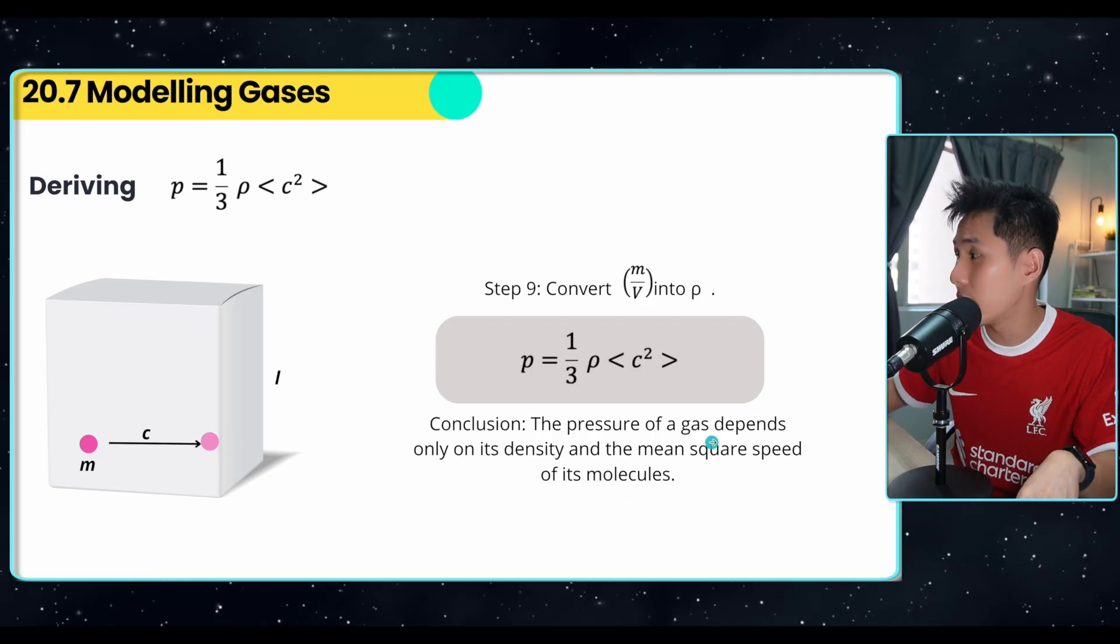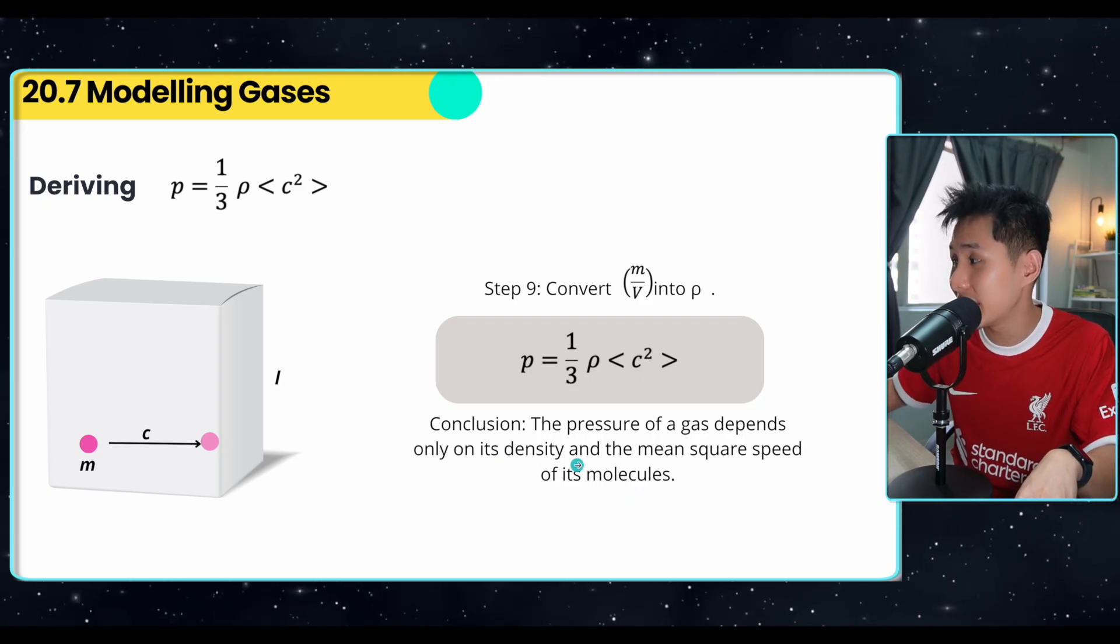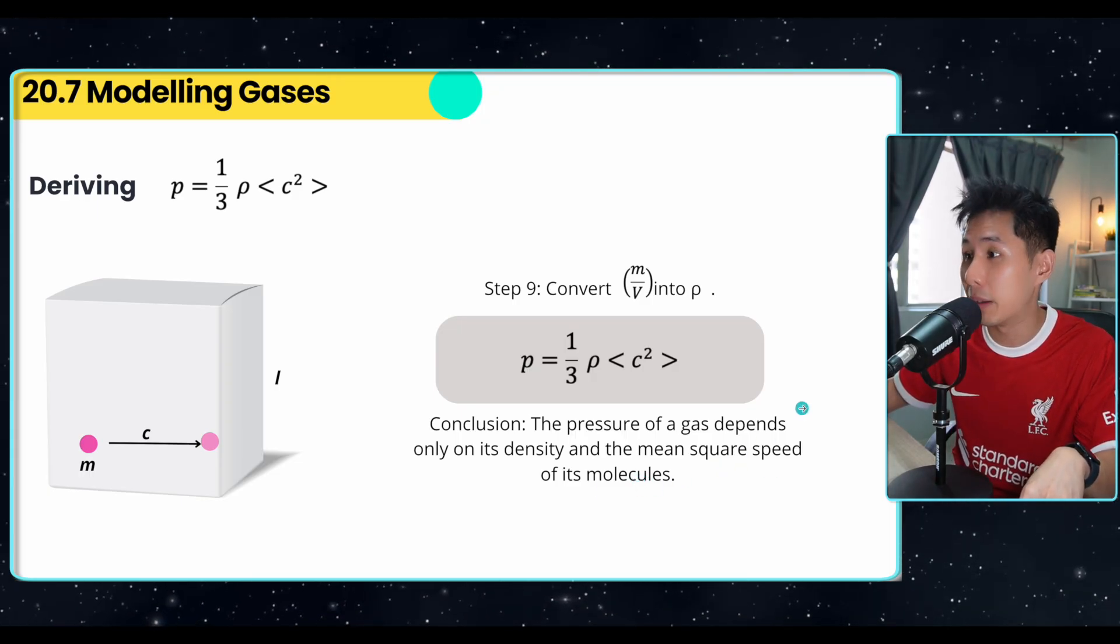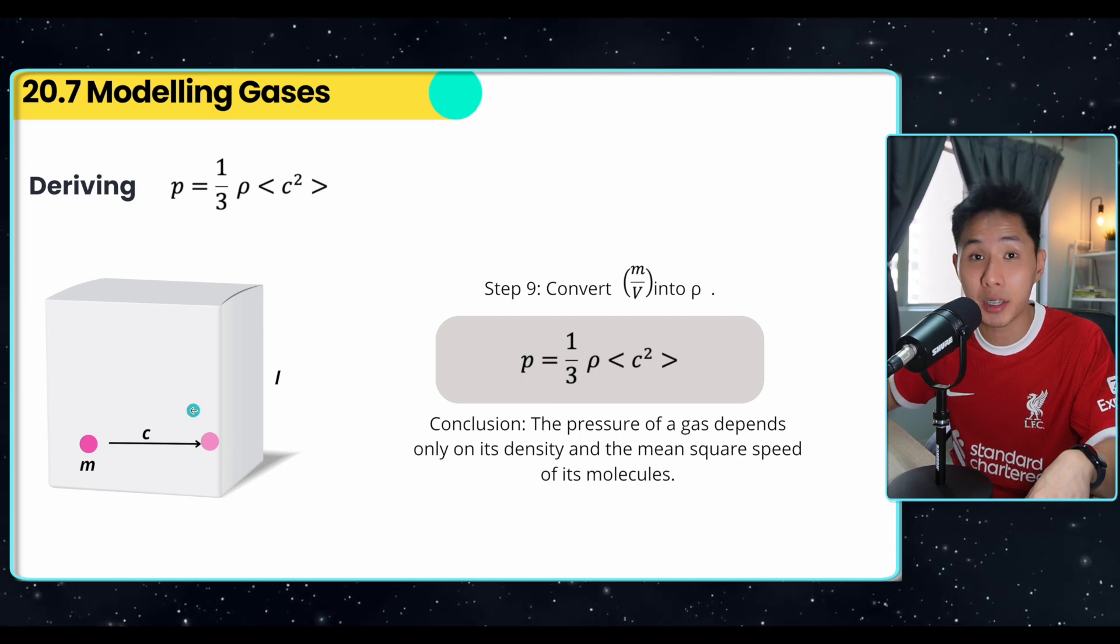Lastly, we'll convert mass over volume into density. And that's when we have pressure equal to 1 over 3 density multiplied by the square speed. So the conclusion is that the pressure of a gas depends only on its density, and the mean square speed of its molecule, which align with what we learned previously. But we are studying it from a particle perspective.